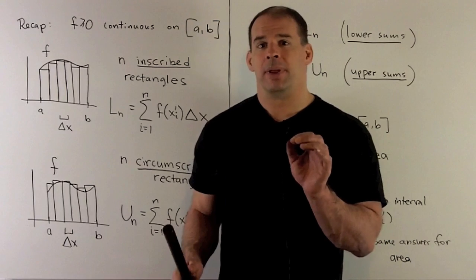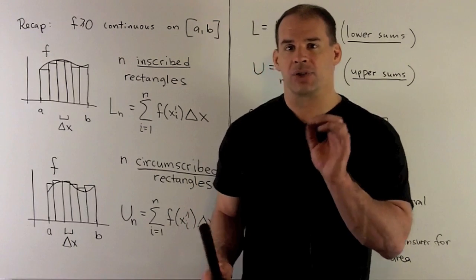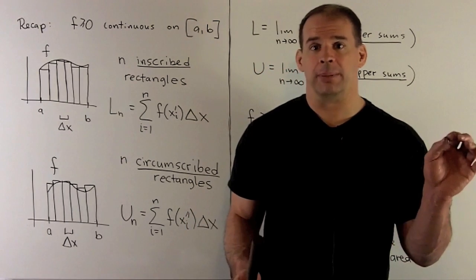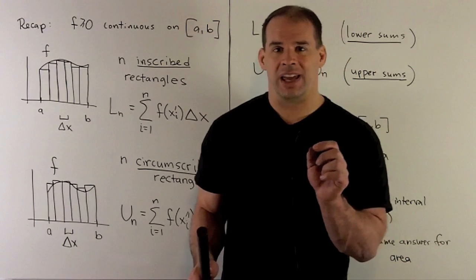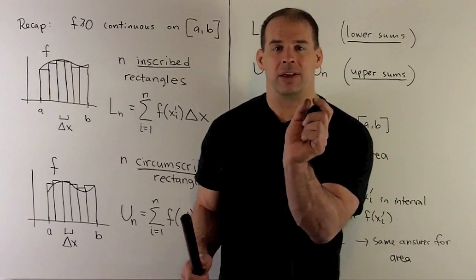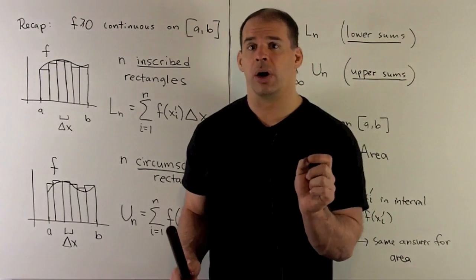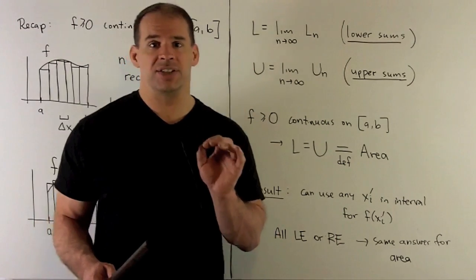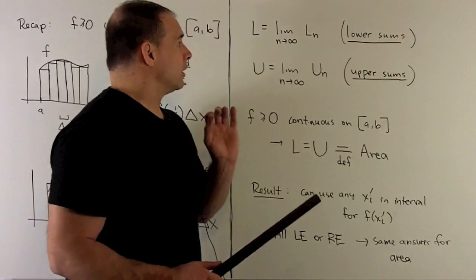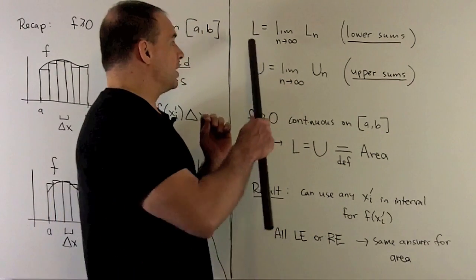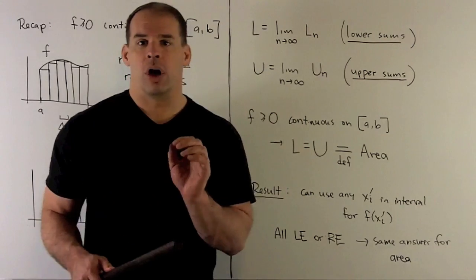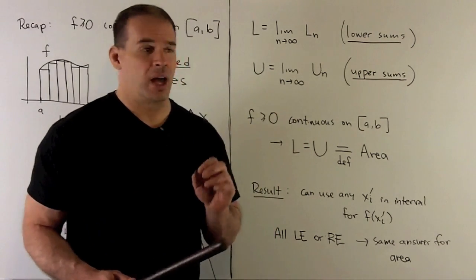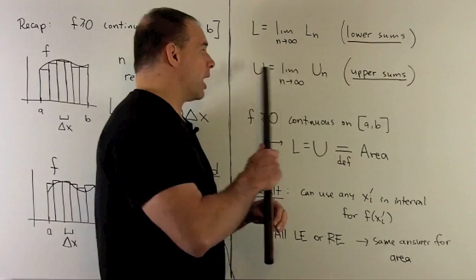Now, I want to let the number of rectangles n go off to infinity. That's going to guarantee that the length of each base goes down to zero. If the limit exists, then in the case of our lower sums we'll call that the lower limit, and in the case of the upper sums we'll call it the upper limit.